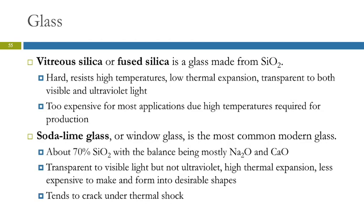Vitreous silica or fused silica is a glass made from just silica — SiO₂. It's very hard, resists high temperatures, doesn't expand much when heated, and is transparent to both visible and ultraviolet light. It's a really high-quality glass, but very expensive because you have to work with it at really high temperatures, so it's only used when absolutely needed.